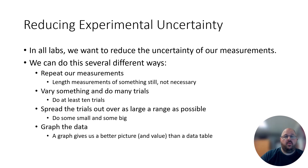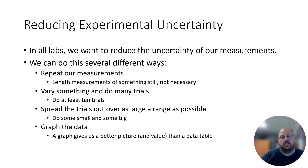The last thing we need to talk about is how to reduce experimental uncertainty. The first thing we can do is repeat our trials, but for length measurements like we're doing in this lab, that's not terribly helpful. The second thing we can do is perform many different trials — we're going to vary the force, which is a pretty good idea since we want to determine a relationship between two variables. We need different forces to get different stretches, so we're going to do at least ten different trials with different weights hanging on our spring.